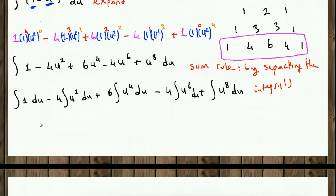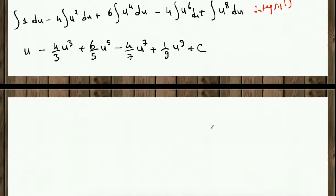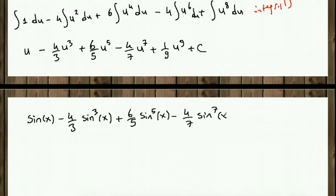So anti-derivative of 1 is u minus u to the third over 3 plus u to the fifth over 5 minus u to the seventh over 7 plus u to the ninth over 9 plus c. Now our final step is to bring u back. Our u was sine of x, so it's going to be sine of x minus 4 over 3 sine cubed of x plus 6 over 5 sine to the fifth of x minus 4 over 7 sine to the seventh of x plus 1 over 9 sine to the ninth of x plus c. So this is our final answer.